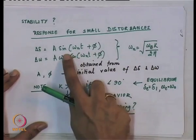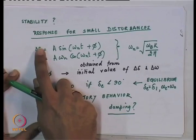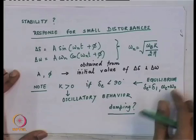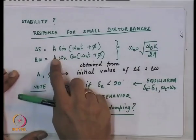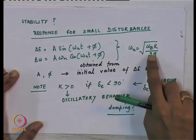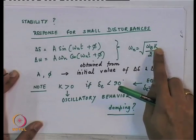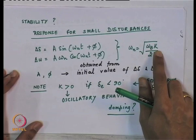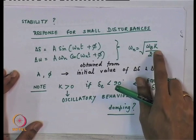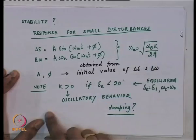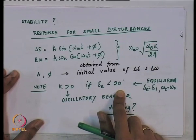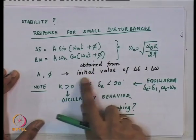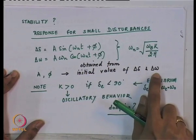For small disturbances around the equilibrium, we get an oscillatory response — this assumes k is greater than zero. There is an oscillatory response if k > 0, that is, delta_e less than 90 degrees. The values of amplitude A and phase phi are obtained from the initial values of delta-delta and delta-omega. Whenever we talk about stability of a system, we are discussing the situation when you are away from the equilibrium.